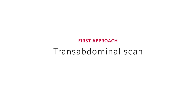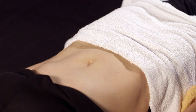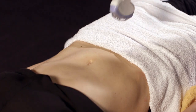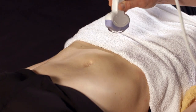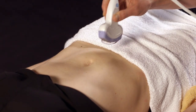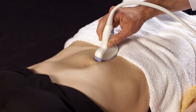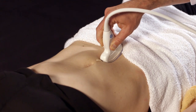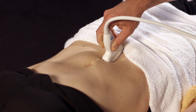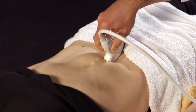Always start with the transabdominal approach first. To do this scan, a full bladder is essential to provide an acoustic window into the uterus. Start by holding the curved array probe, also known as the abdominal probe, in longitudinal orientation. The indicator should point to the patient's head. Place the probe immediately above the pubic symphysis.